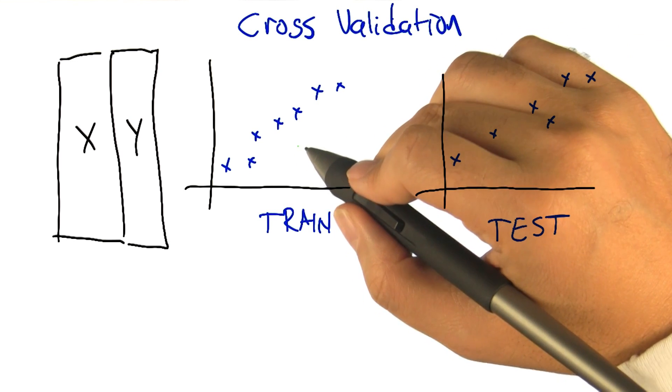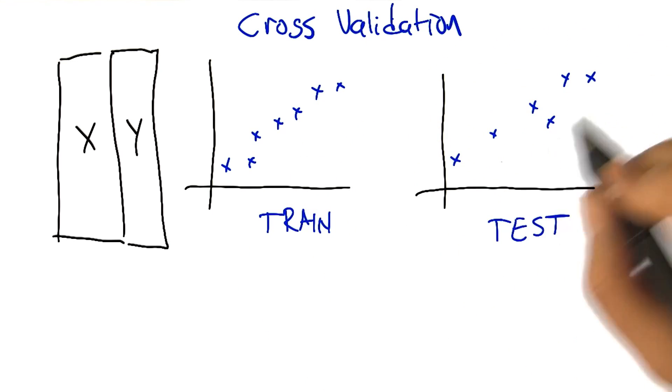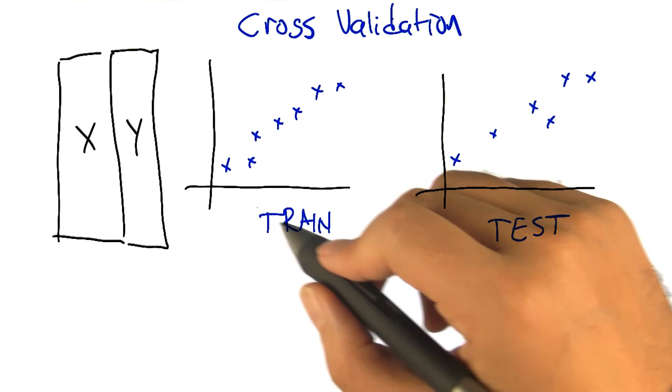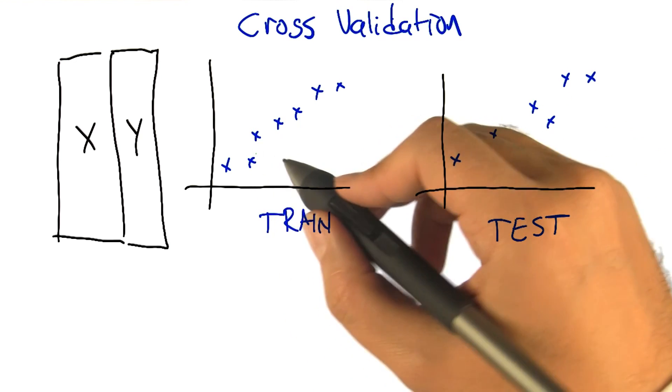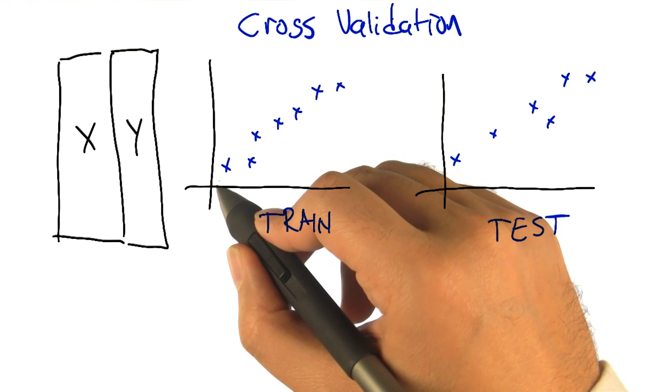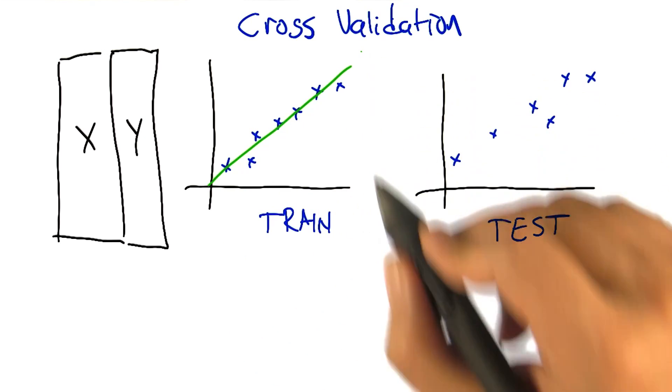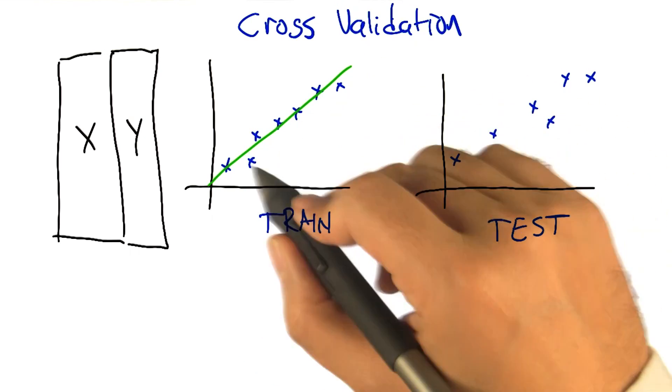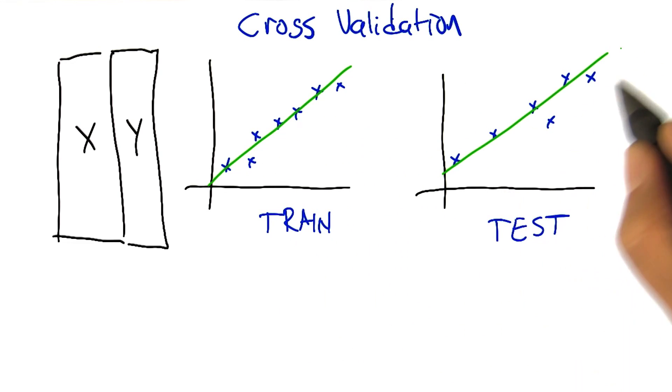And ultimately what we're trying to do is find a way of predicting values in the testing set. So what we imagine is we do some kind of regression and we might want to fit this to a line. The line is good, it kind of captures what's going on, and then if we apply this to the testing set, maybe it's going to do a pretty good job.